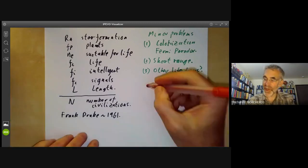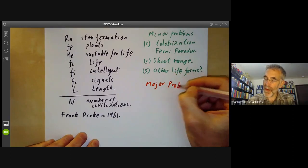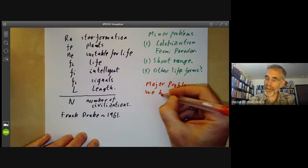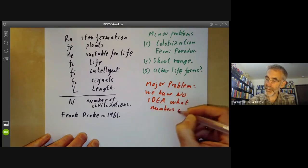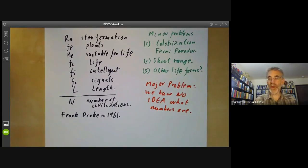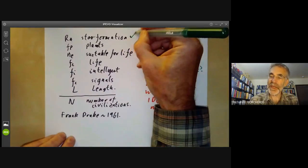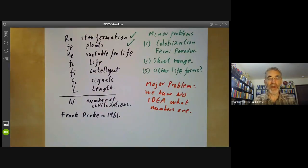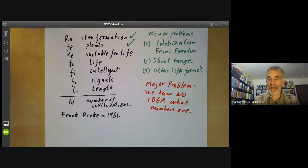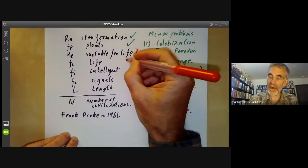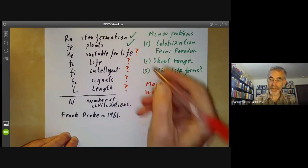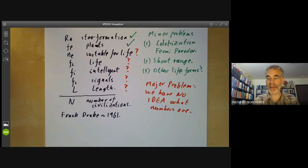The major problem is we have no idea what the numbers are. So let's go through this and point out what the problem is. First of all, with the rate of star formation and the number of planets, these are under reasonable control now. We sort of know pretty well how many stars there are in the galaxy and how many galaxies there are. And observations in the last couple of decades have shown that it's actually fairly common for stars to have planets. Most of the remaining ones, we simply have no idea what these numbers are.